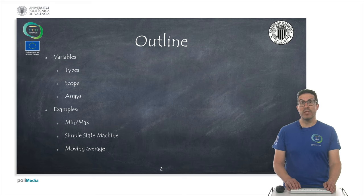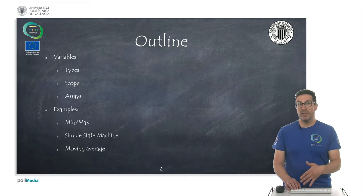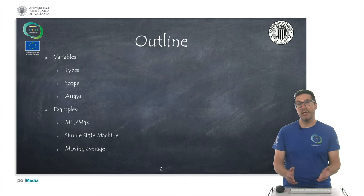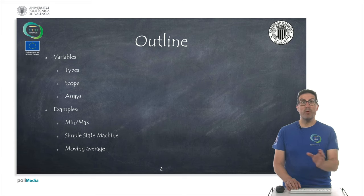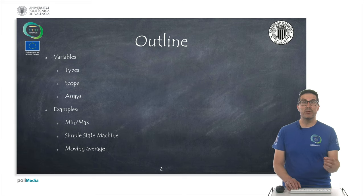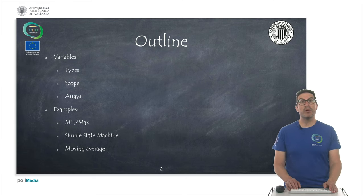This is the outline of the presentation. We are going to talk about variables, particularly the types of variables, their scope, and also a special kind of variables which are called arrays. Then we'll move into three examples: a minimum-maximum computation of a signal, implementing a simple state machine, and computing the moving average of a signal.